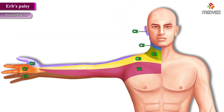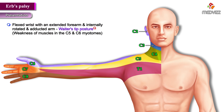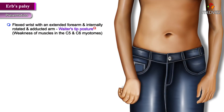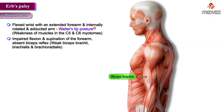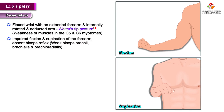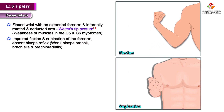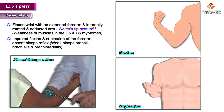Presentation: Weakness of the muscles in the C5 and C6 myotomes results in a flexed wrist with an extended forearm and an internally rotated and adducted arm. This is classically labeled as the Waiter's tip posture, due to weak biceps brachii, brachialis, and brachioradialis, resulting in impaired flexion and supination of the forearm and an absent biceps reflex.